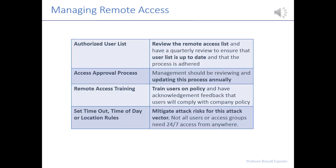Managing remote access requires attention to four categories. First, an authorized user list: there should be a list of who has remote access, reviewed quarterly. People who have remote access but never use it should be removed — the fewer access points, the better, consistent with the concept of minimum privileges. Second, an access approval process: management should review annually who approves access, what level of the system, and which applications, ensuring individuals don't get greater access than needed when remoting in. Training is also important: people need to be trained on policies, how to connect, and to always use the VPN.